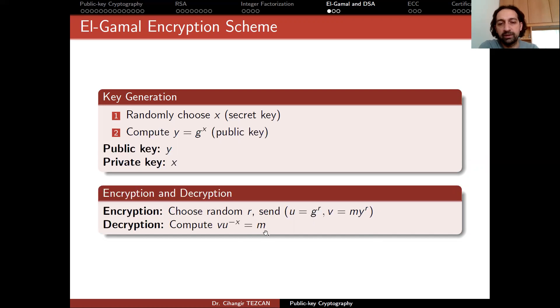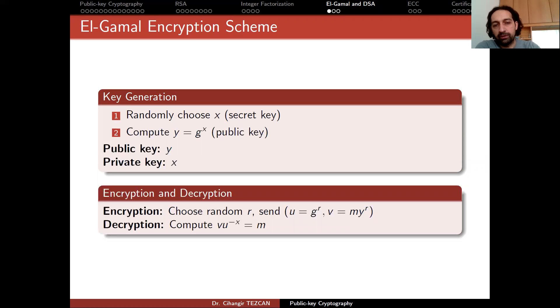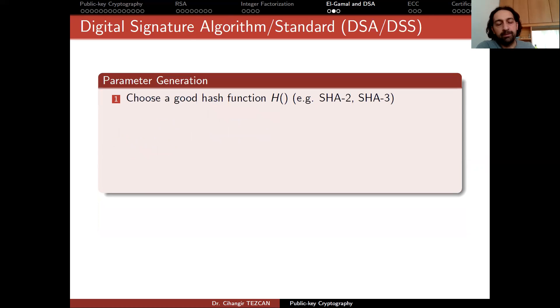So encryption and decryption is really simple. And it all relies on the security of the discrete logarithm problem. So if somebody can find a fast way of calculating discrete logarithms, then they will be able to break any El-Gamal communication. Instead of RSA, you can also use El-Gamal, which relies on different mathematical problems.